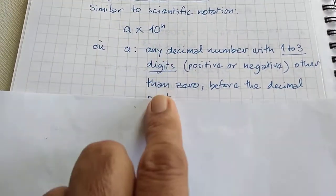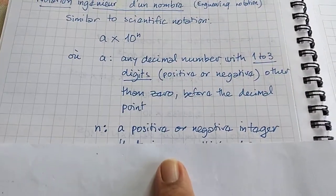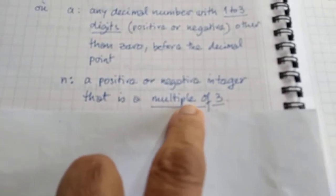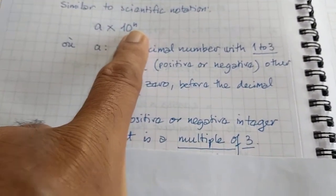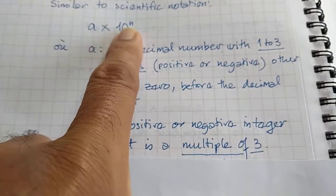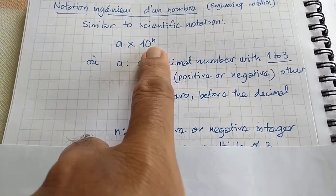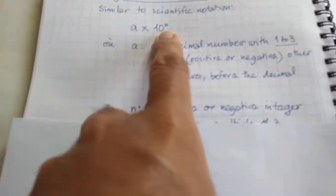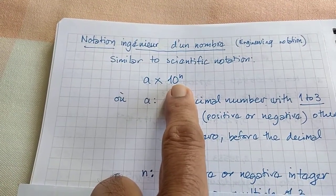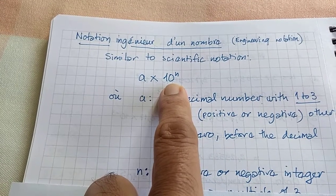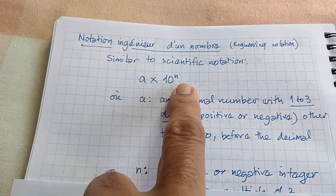And here is the tricky bit: n is a positive or negative integer, just like for scientific notation, but it must be a multiple of 3. So in scientific notation you could have 10 to the power 1, 2, 3, 4, minus 6, minus 7. But in engineering notation, n has to be a multiple of 3: 10^0, 10^3, 10^6, 10^9 are allowed, but not 10^7, 10^1, 10^2, or 10^-4. 10^-3 is okay because minus 3 is a multiple of 3.